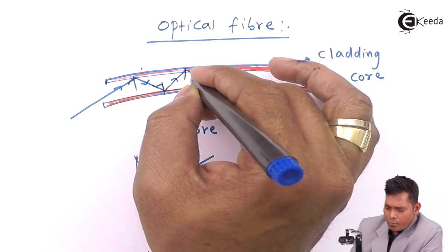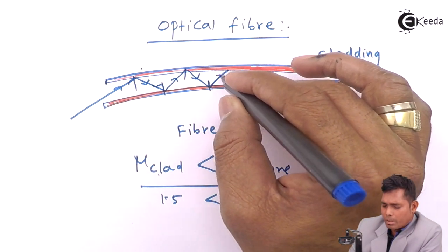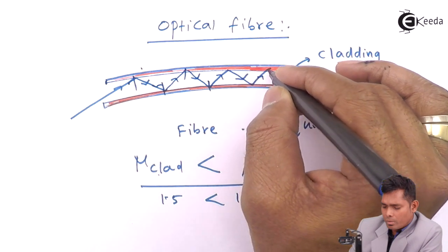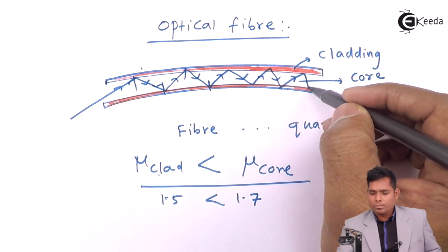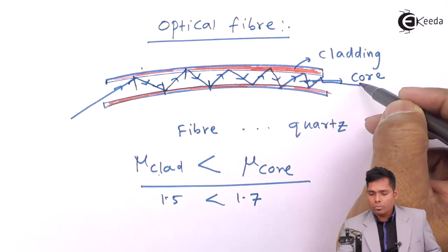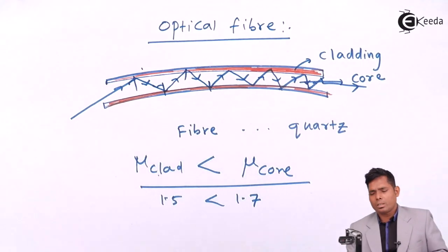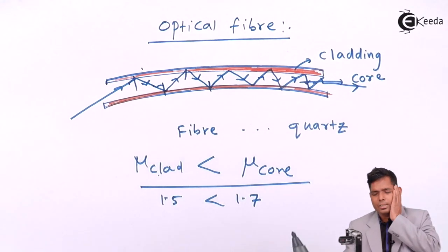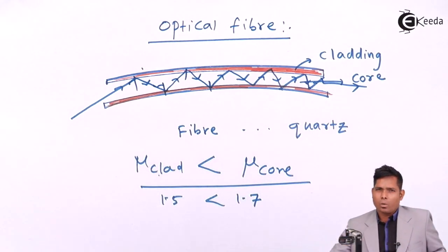Therefore the ray of light inside the optical fiber undergoes multiple reflections. So it undergoes multiple reflections and finally it comes out of the tube in whatever direction it comes out. So this way, the intensity of light which enters and the intensity of light which comes out are almost the same intensity.